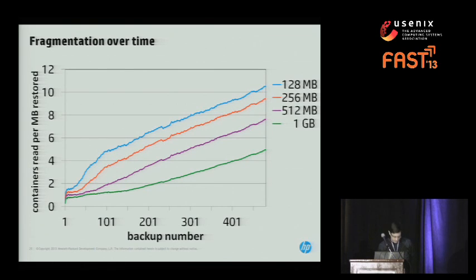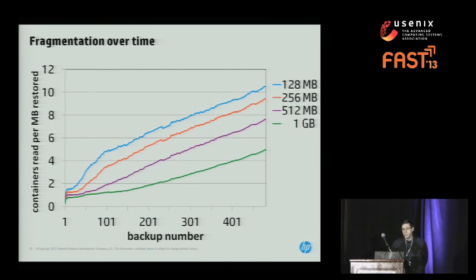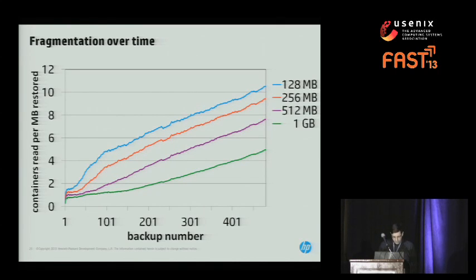On the graph, the bottom axis is time — backup number — and the left axis is our fragmentation metric. Higher is worse. I'm showing four different cache size values: the top one is the smallest at 128 megabytes, and the bottom green one is the biggest at 1 gigabyte. The fragmentation is pretty much linearly increasing over time, and the higher cache size does somewhat reduce fragmentation, but does not appreciably change the slope.